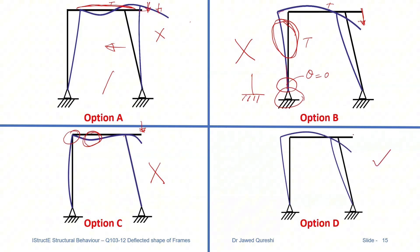Let's verify option D. When we apply a downward force, it will push the beam upwards, so we will have tension at top, and it will move towards the weaker side — leftwards. Also, the beam is bending but has tension outside. So option D is the correct option.